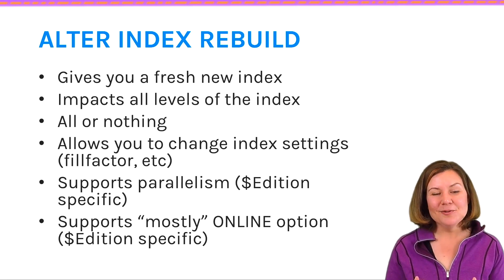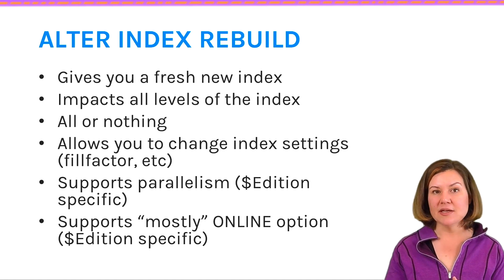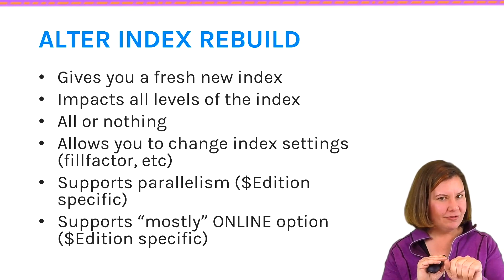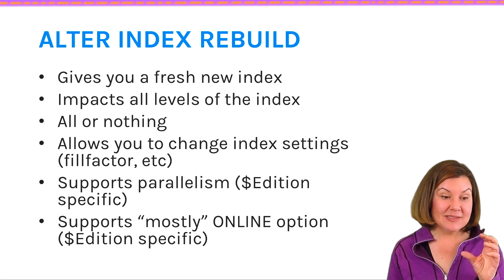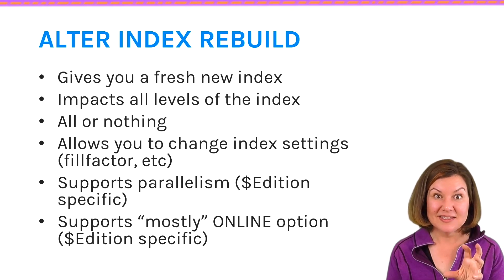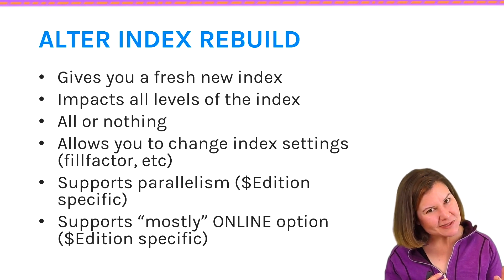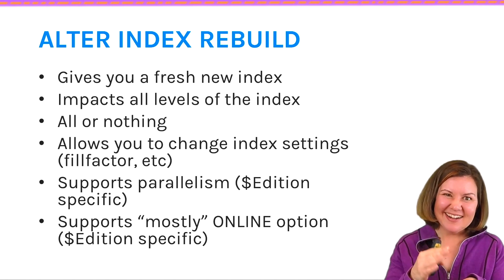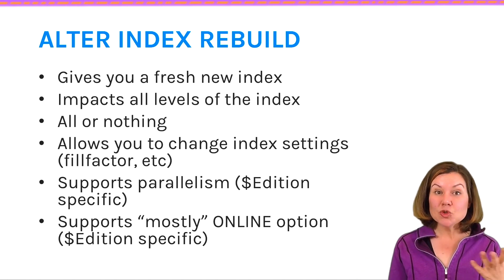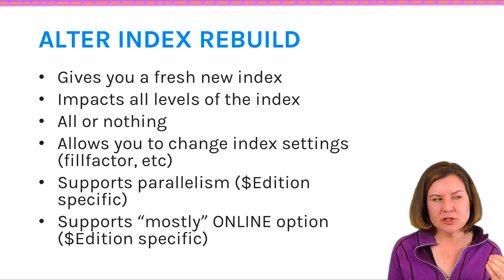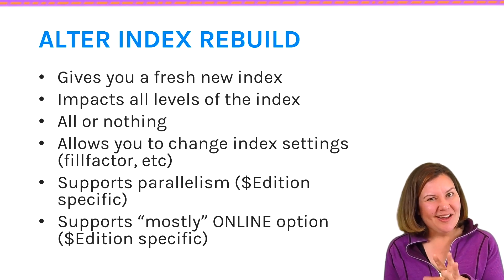Because we're building a new index, we can change settings on it. If we want to adjust the fill factor — say it was 100% before but we want to leave 5% empty on the pages — we can change that setting during a rebuild. If we have Enterprise Edition, we can specify multiple cores with a max DOP setting. We can also choose an online rebuild in Enterprise Edition, which is mostly online; at the end it gets a brief exclusive lock to update the metadata. In SQL Server 2014 and higher, we get cool new options where we can even say, when you get to the exclusive lock part, wait at a low priority so you don't cause a big blocking chain.